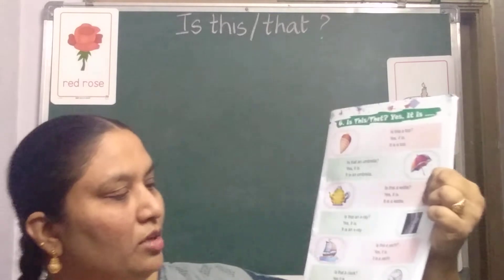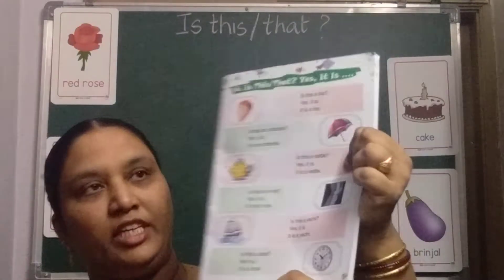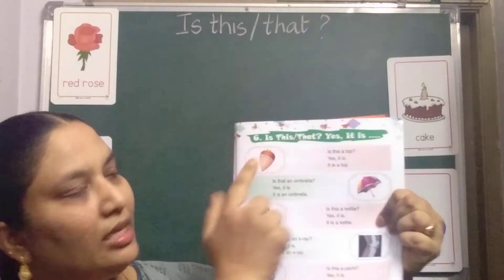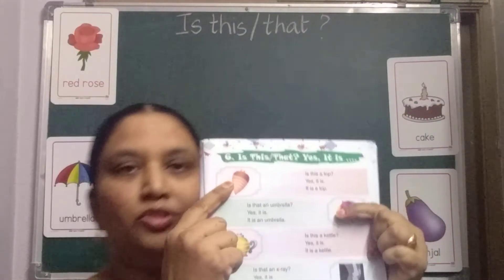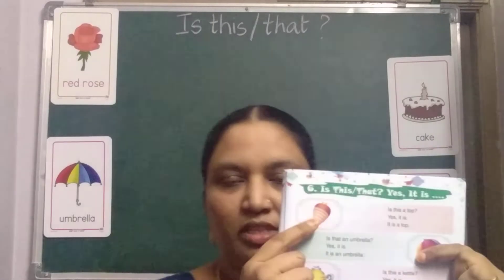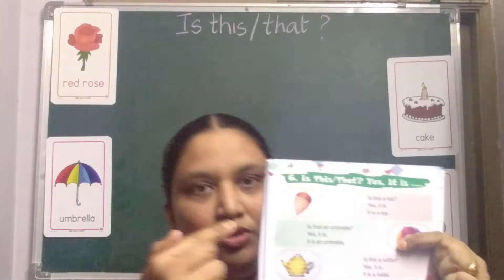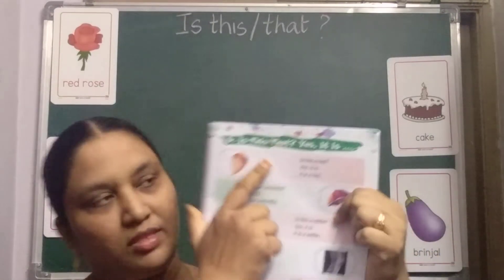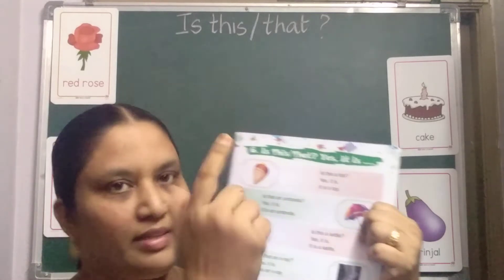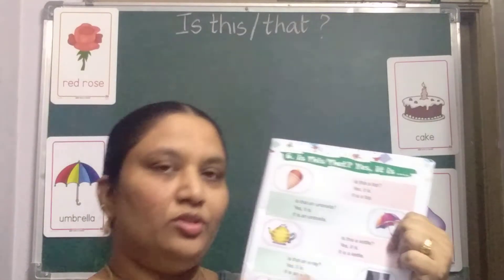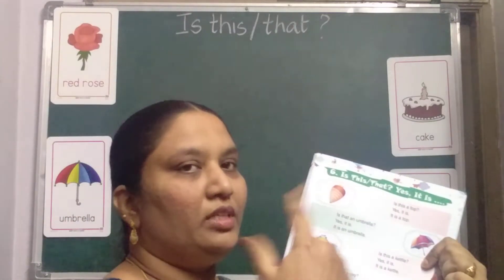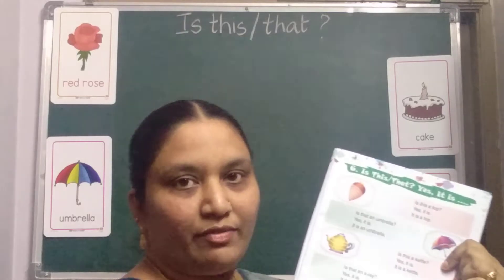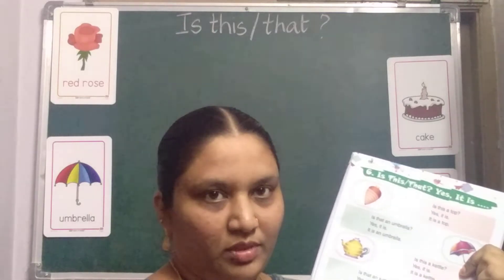This is your course book, page number 15. Is this a top? You know already — when one thing is near to you, you will say 'this.' And 'that' also you know — when one thing or one person is standing far from you.